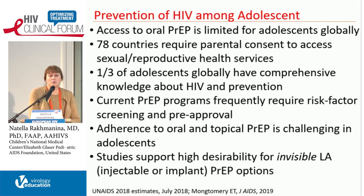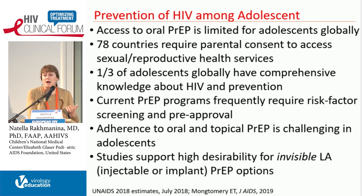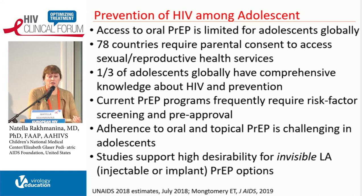Access to prevention — PrEP — is extremely poor for adolescents right now. Seventy-eight countries require parental consent, meaning adolescents cannot have access. Only one-third of adolescents globally have comprehensive knowledge about HIV and prevention. In adolescents more than any other population, we should get away from high-risk definitions — they are all high-risk, should be treated as such a priori, and we should not be asking them very personal, private questions and mapping them onto risk categories. Adherence to oral and topical PrEP is challenging and very suboptimal. Focus group discussions from multiple published studies show very high desirability for invisible, long-acting, injectable, and implant PrEP options among adolescents.